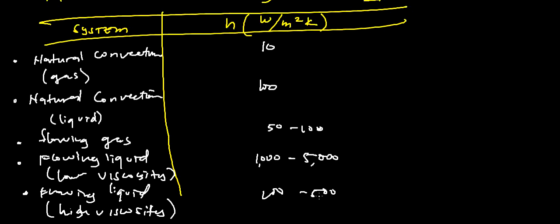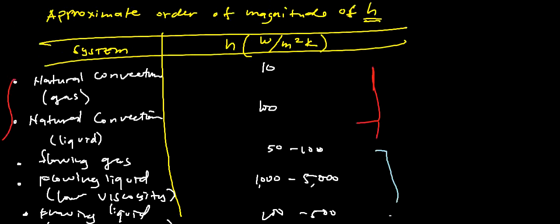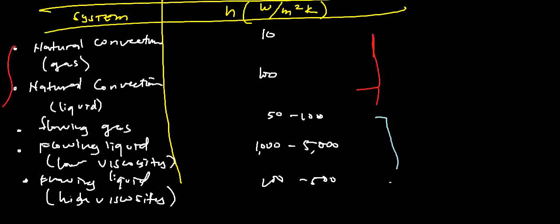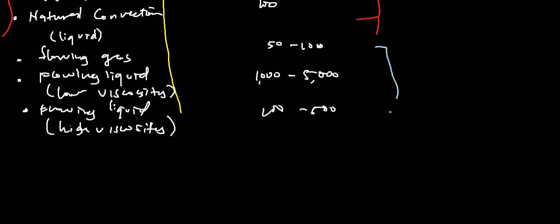So, from this given table, the approximate order of magnitude H or the approximate value of the convective heat transfer coefficient. It can be seen that by natural convection, the natural convection are generally much lower, right? Than those forced convection. So that is the approximate value of the H. And once again, we can notice here that the natural convection have a much lower value than this forced convection.